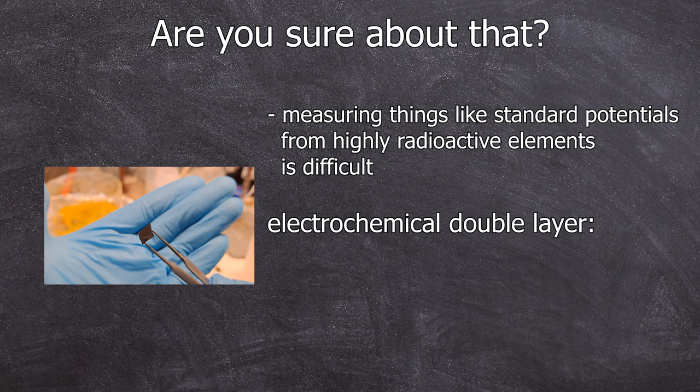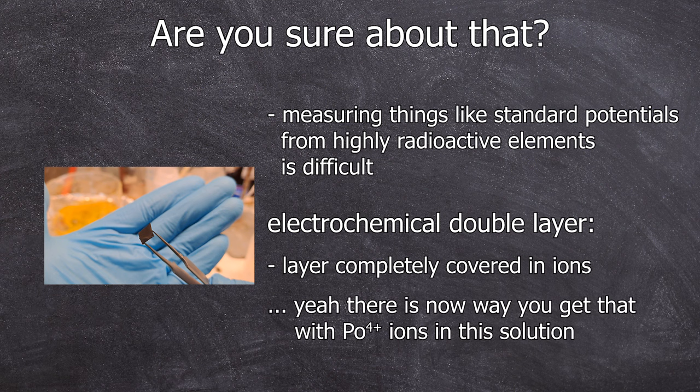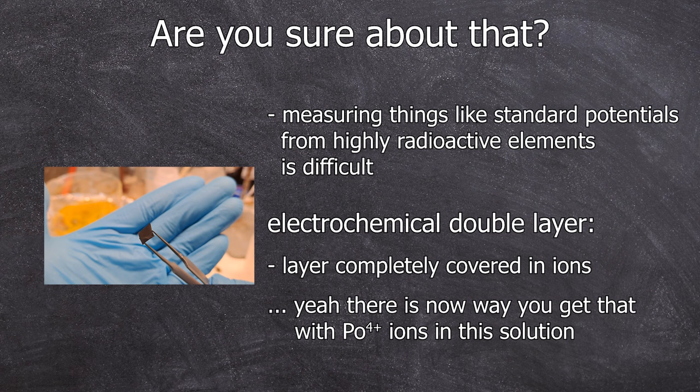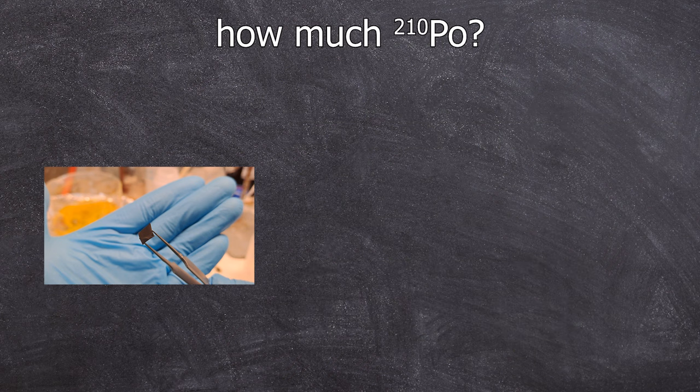A standard potential also assumes that you have an electrochemical double layer that can form where the surface is completely covered in polonium ions. But the concentration of the polonium ions in our example is way too low for any standard potential to really apply here. Alright, let's go on to the next question.